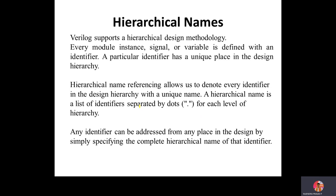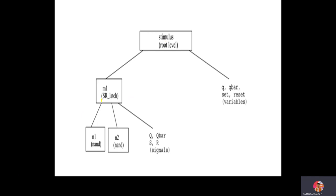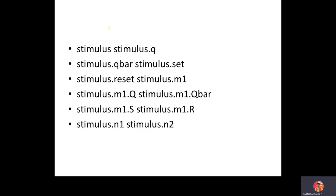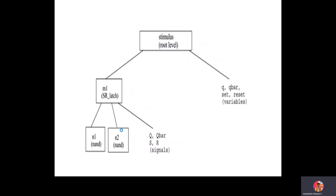Finally, hierarchical names: every module, instance, signal, or variable is defined with an identifier that has a unique place in the design hierarchy. Hierarchical name referencing allows you to reference any item in the hierarchy using dot notation. For example, in a stimulus with an SR latch, hierarchical names would be written as stimulus.q, stimulus.q_bar, stimulus.reset, m1.q, m1.r, and so on. This is how you write hierarchical names and connecting ports in Verilog. Thank you.